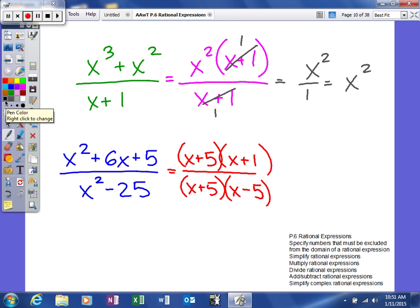And as you can see now, we can see what our common factors are. So we'll cancel those. So the simplified form for this rational expression is x plus 1 over x minus 5.